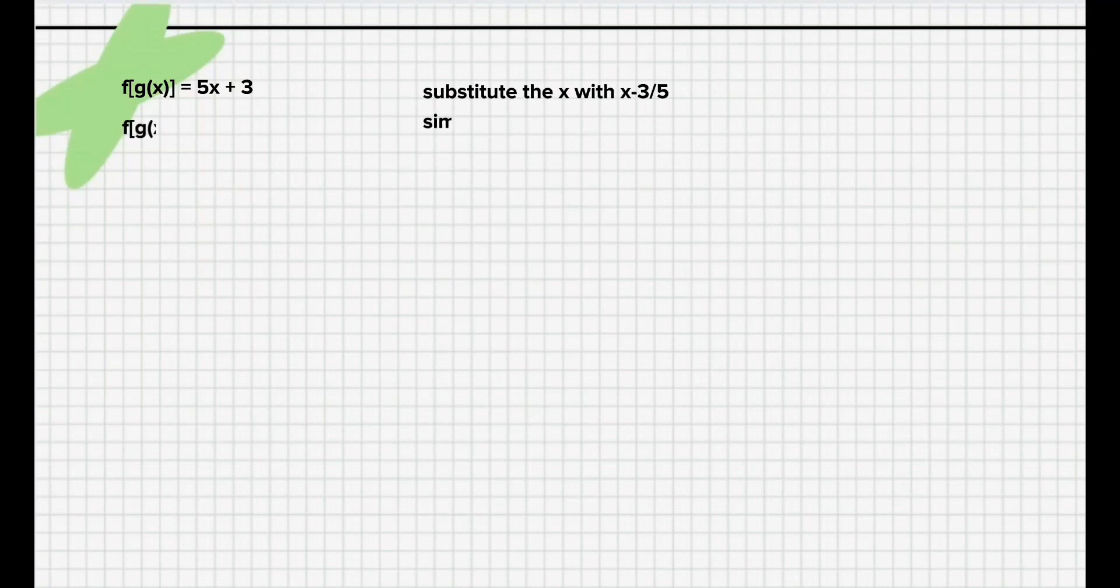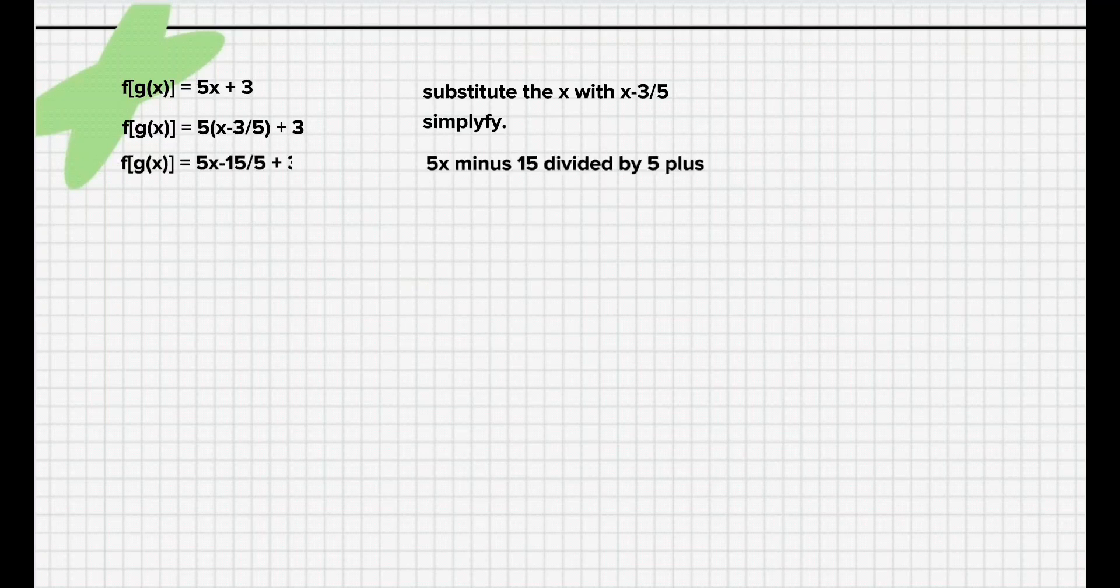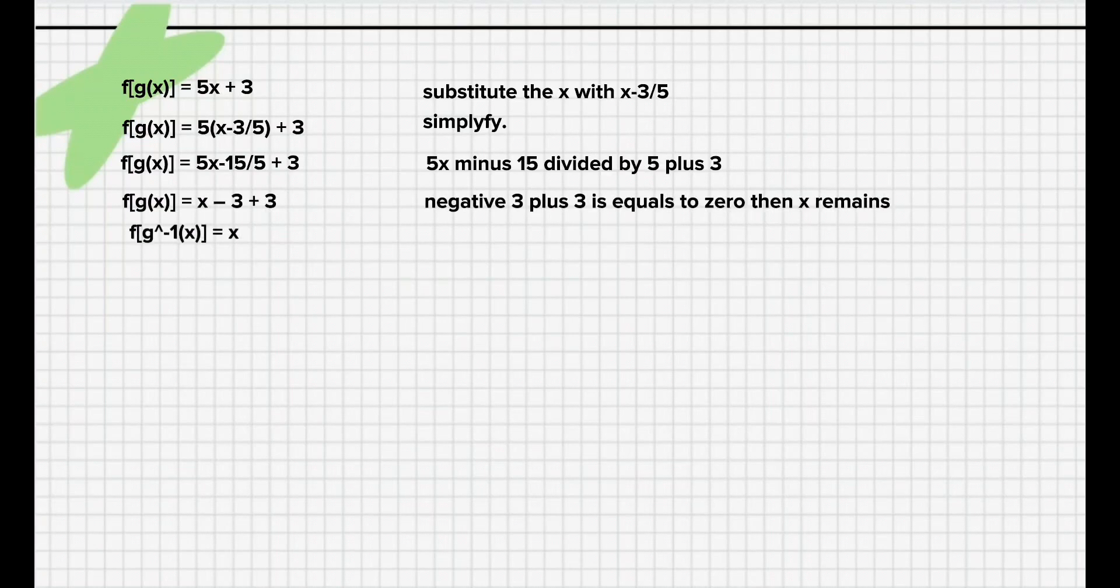So, we simplify: 5 × (x - 3)/5 + 3 = (5x - 15)/5 + 3. Then, x - 3 + 3 = x.